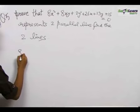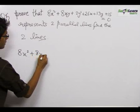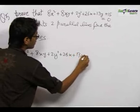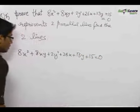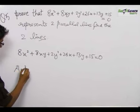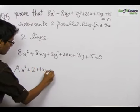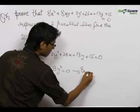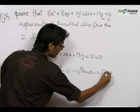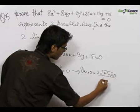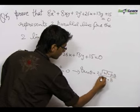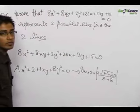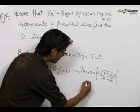We write the equation: 8x² + 8xy + 2y² + 26x + 13y + 15 = 0. We know that for an equation ax² + 2hxy + by² = 0, the angle between the two lines is given by 2√(h² − ab) / (a + b). So if the two lines are parallel, the angle between them equals 0, which means h² = ab.